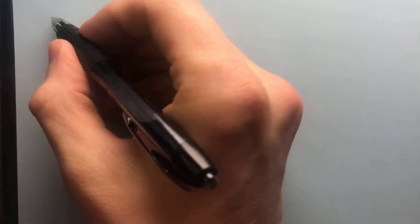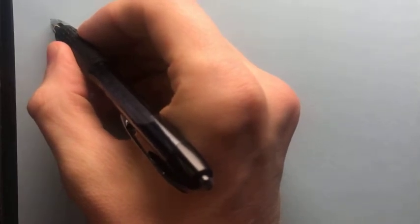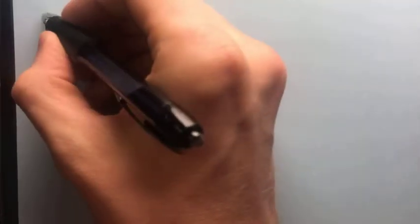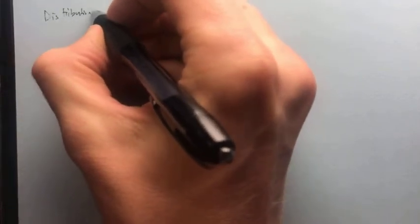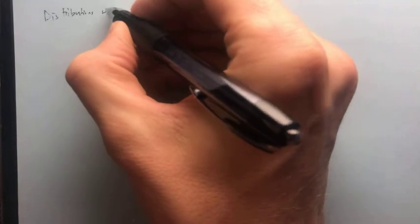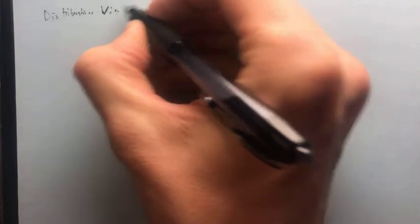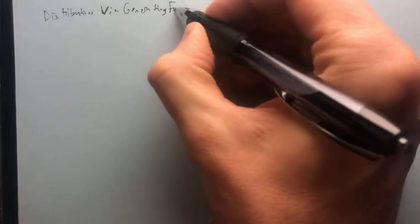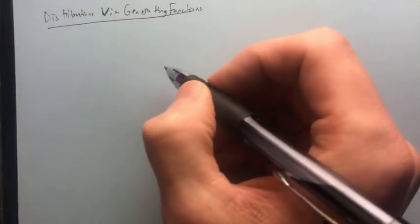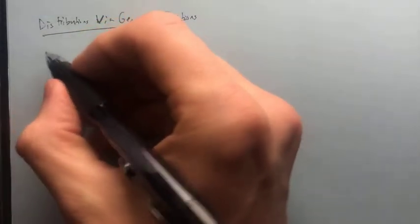Now that we've got some basic notation down for generating functions, let's start doing distributions via generating functions. So distributions — we have so many items, and we want to give those items to different people, or arrange them in different categories, or however you see fit.